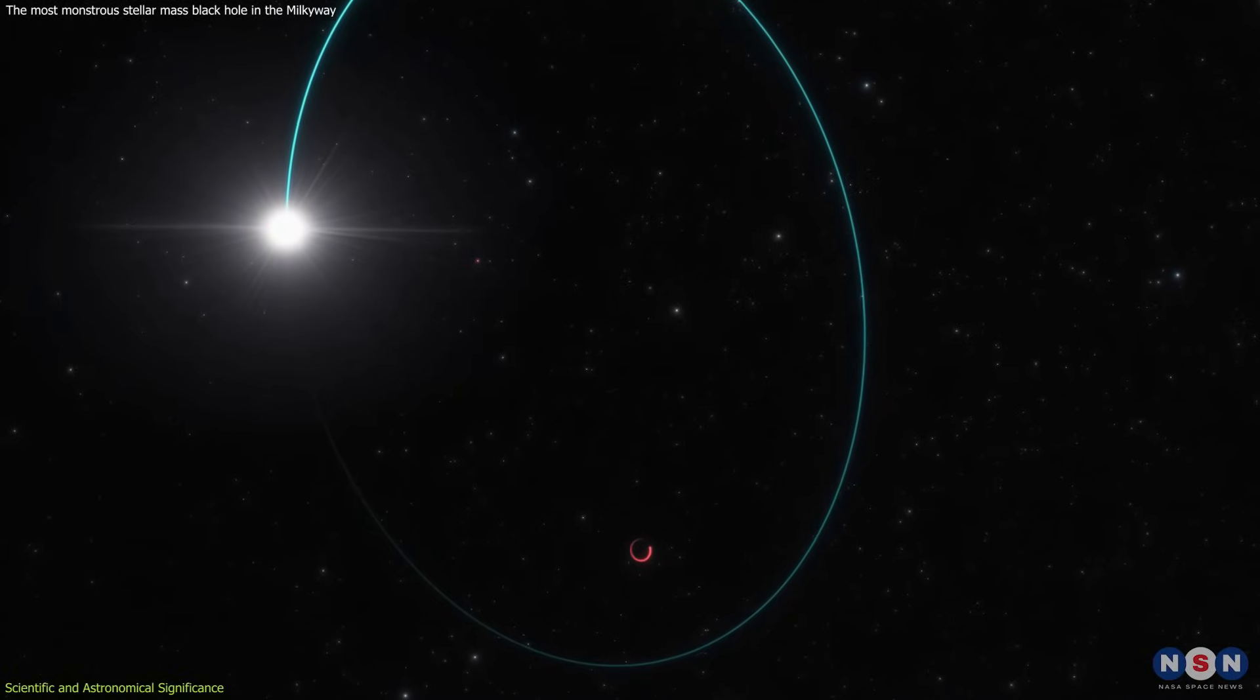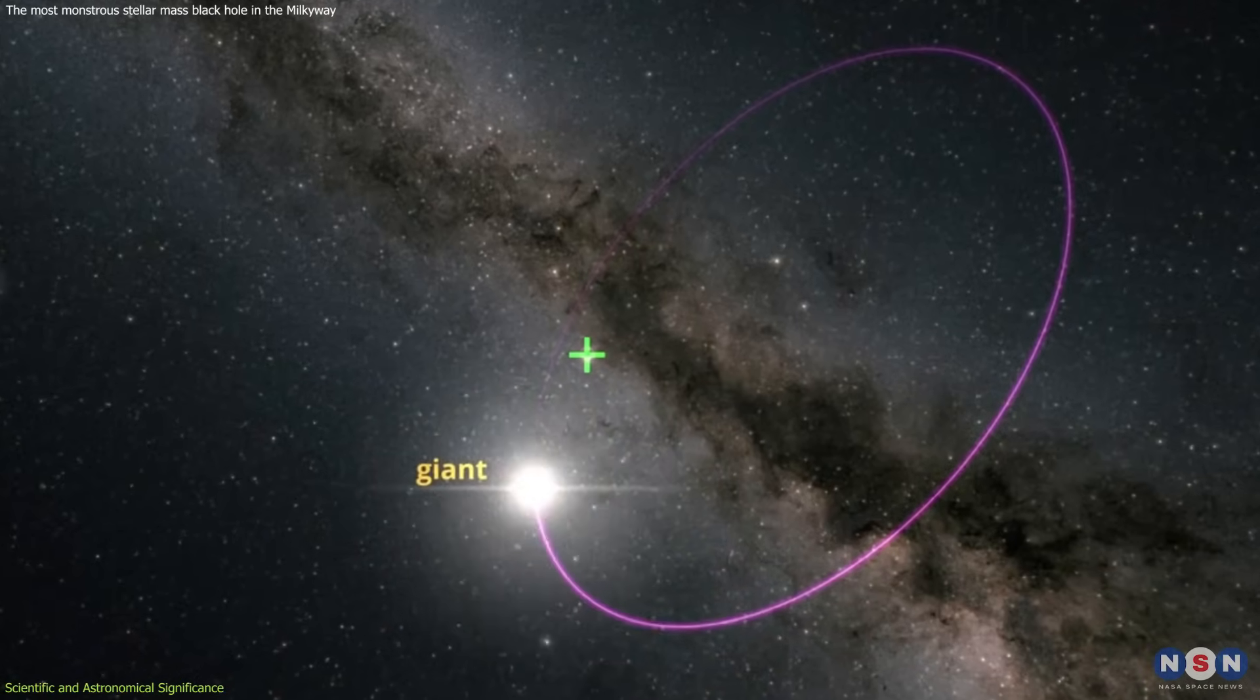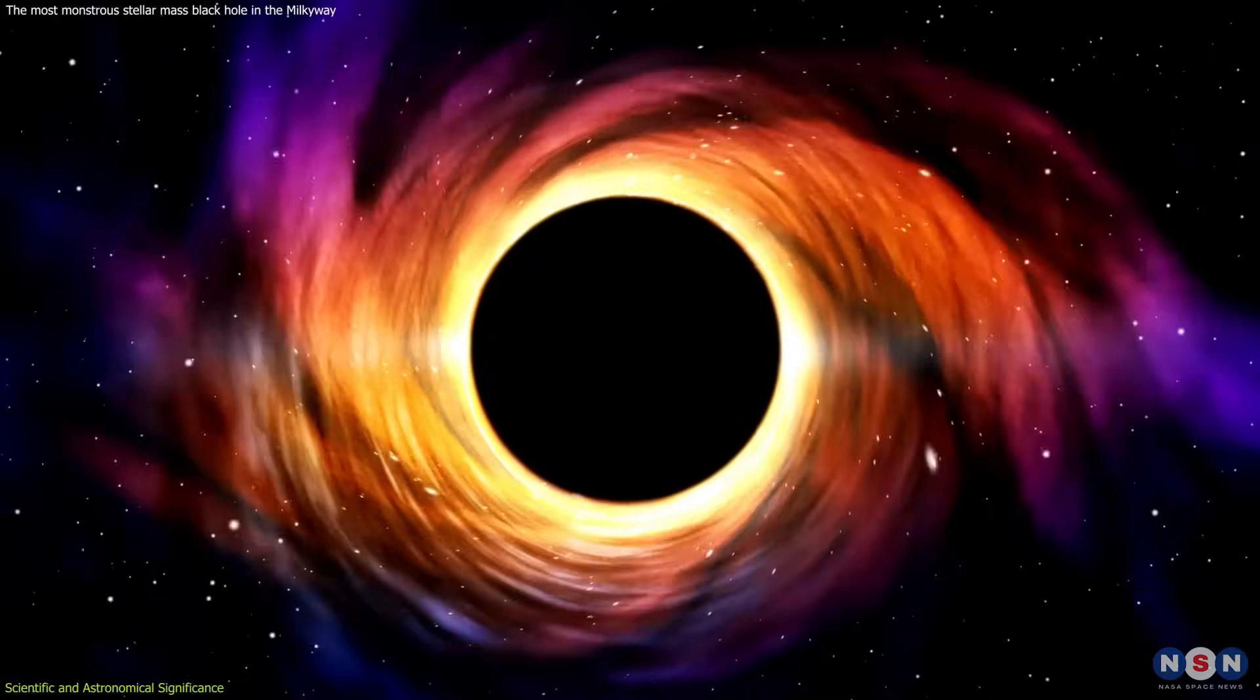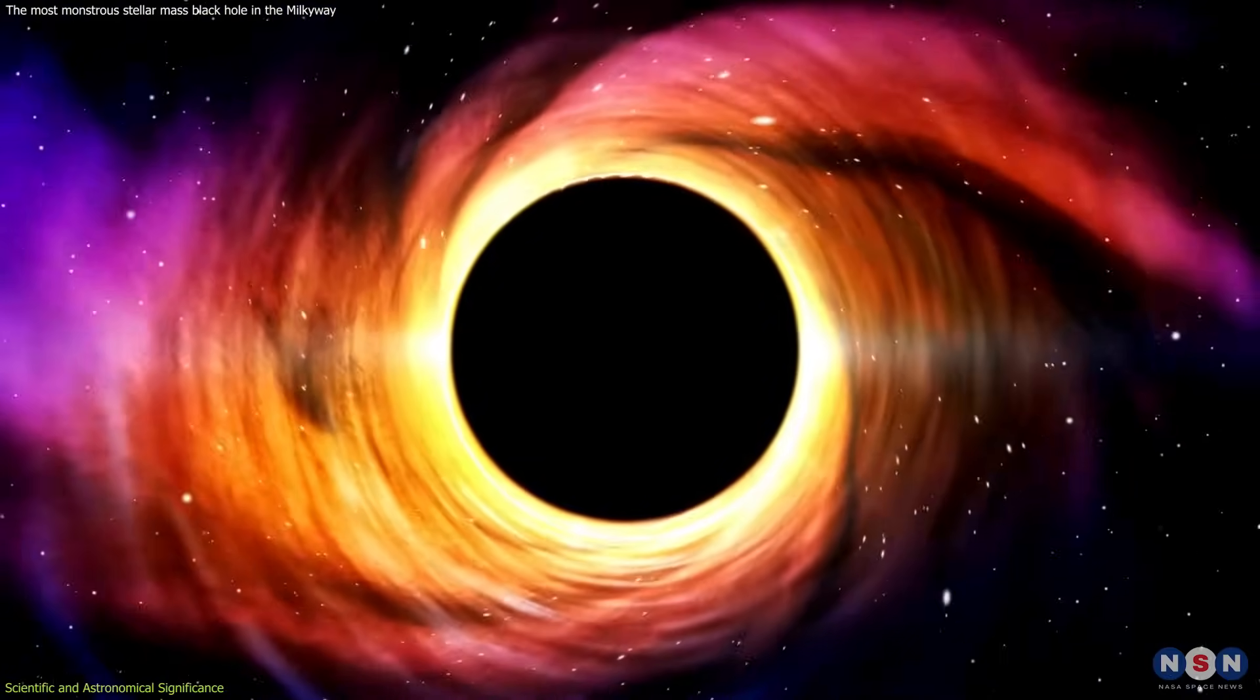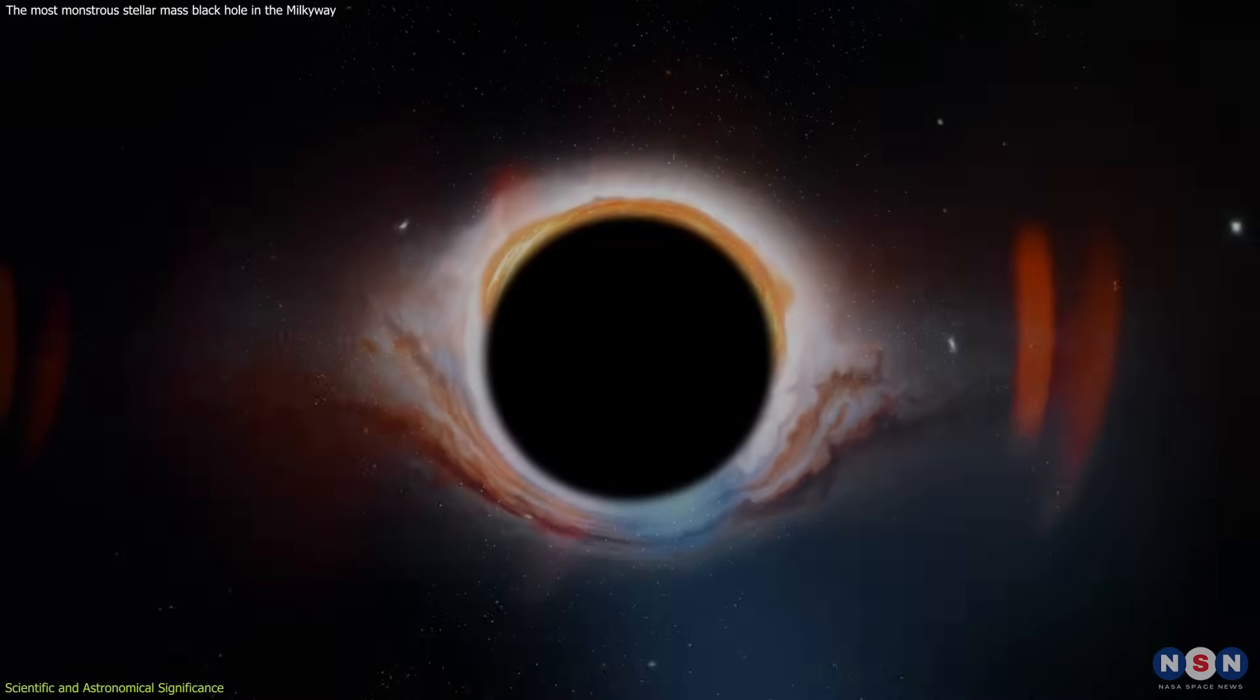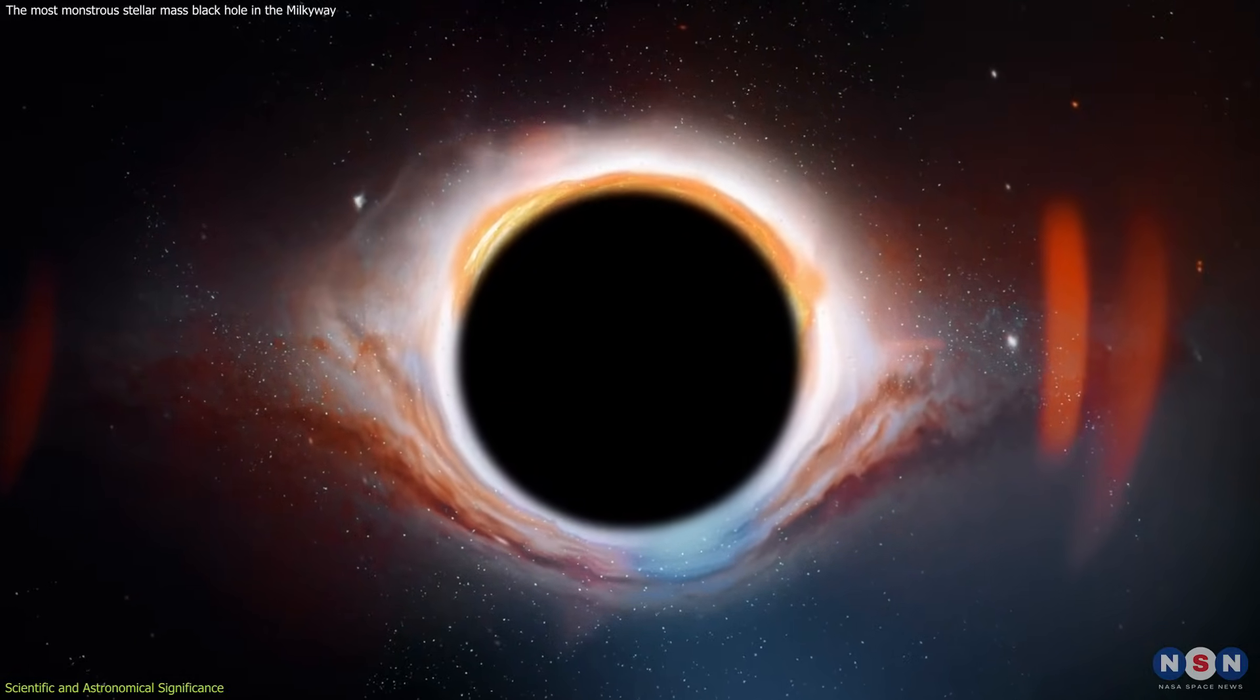This discovery is pivotal as it provides the first solid evidence that dormant black holes can be detected through their gravitational influence alone, without the need for them to interact violently with surrounding matter. This method of detection is particularly valuable because it allows astronomers to study black holes in their most common state, dormant.